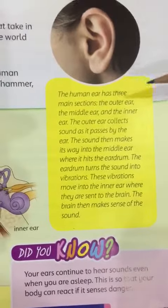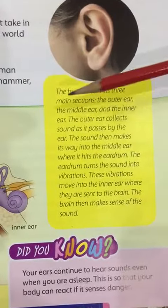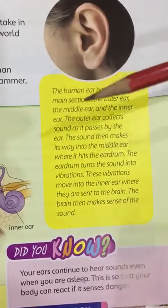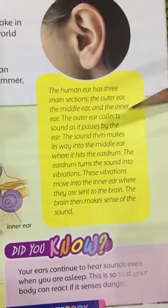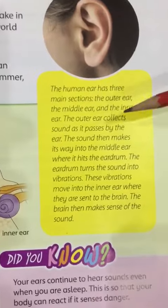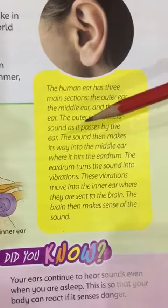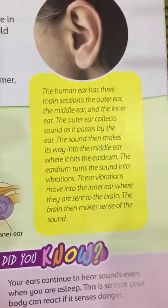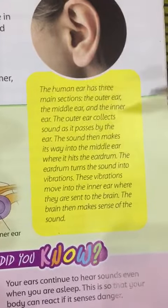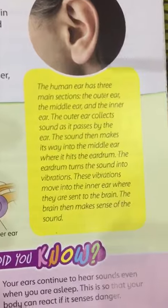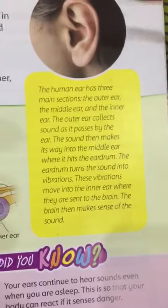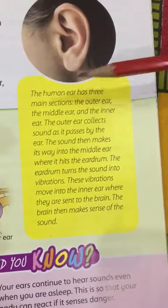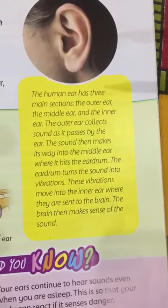The human ear has three main sections: the outer ear, the middle ear, and the inner ear. The outer ear collects sounds as they pass by. The sound collected by the outer ear is then passed to the middle ear.